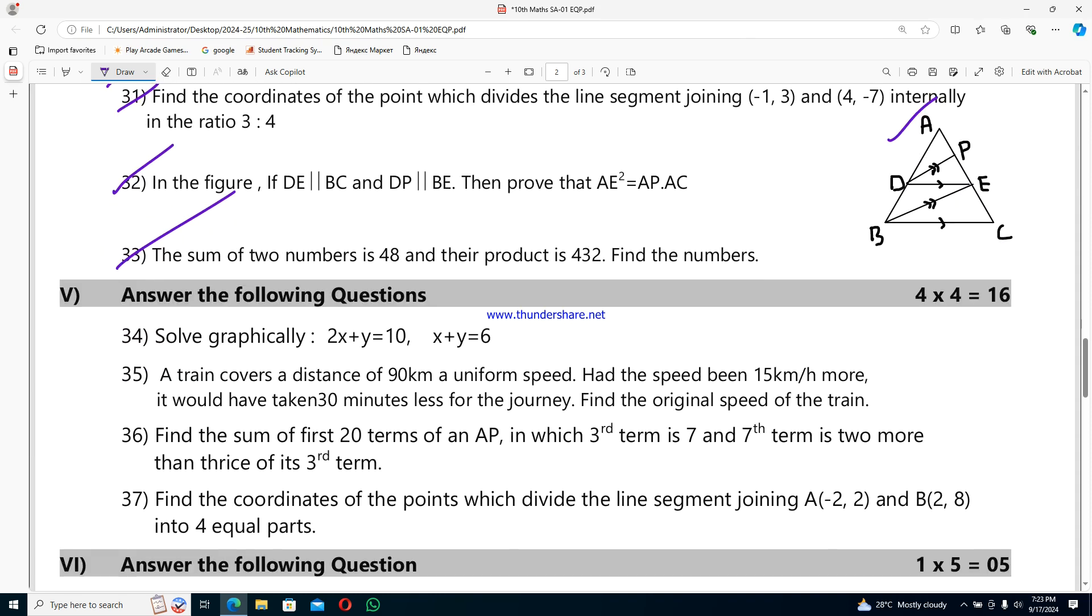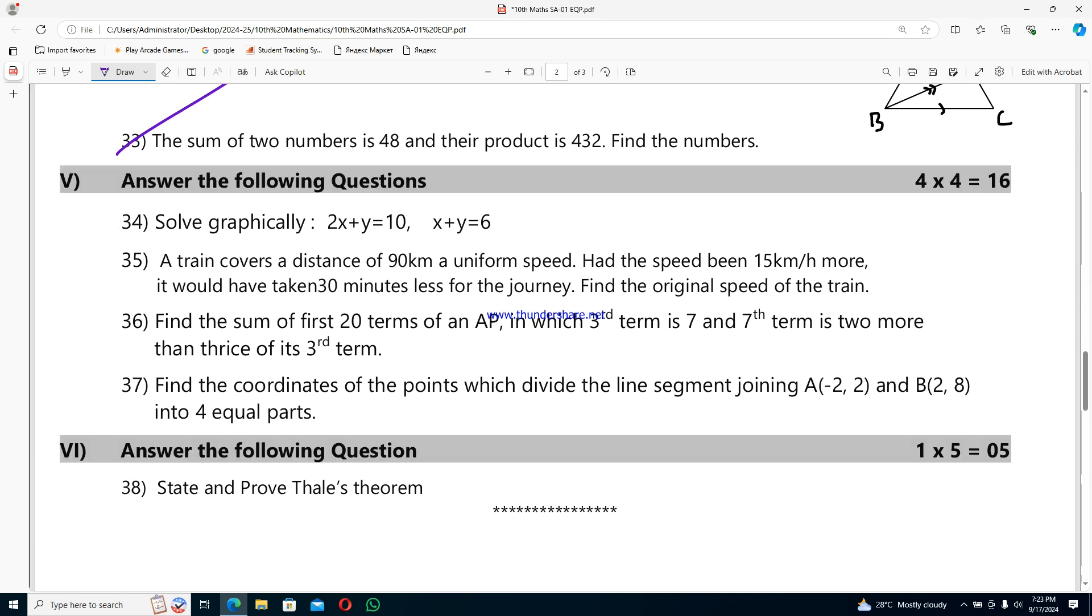Fifth row for 16 marks. Question 33: solve graphically 2x+y=10 and x+y=6. Question 34: a train covers a distance of 90 km at uniform speed. Had the speed been 15 km/h more, it would have taken 30 minutes less for the journey. Find the original speed of the train.